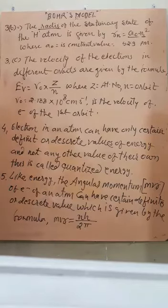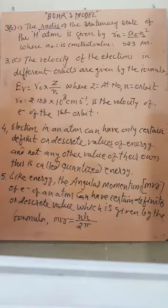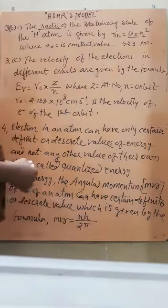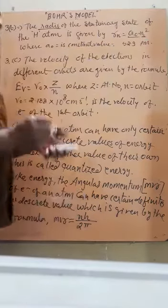Is that correct? Yes, student. Next to the first video, the radius of the stationary state of the hydrogen atom is given by the formula: radius of nth orbit, rn, is equal to a0 multiplied by n squared.